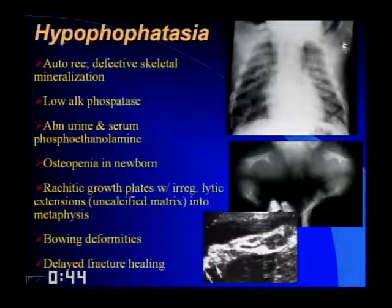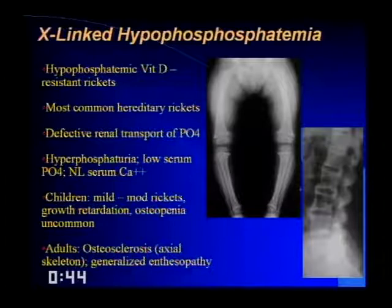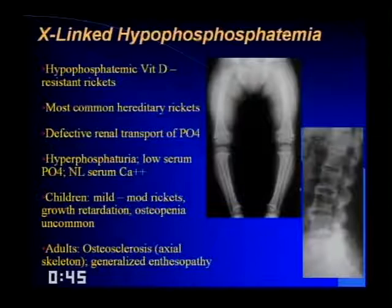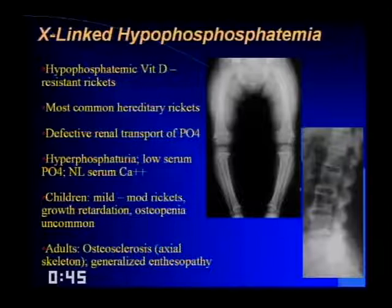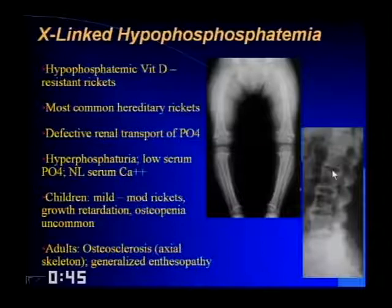X-linked hypophosphatemia — vitamin D-resistant rickets — is the most common hereditary type of rickets, with defective renal transport of phosphorus. Patients have hypophosphaturia, low serum phosphorus, and normal calcium. Ricketic changes are less severe than in renal rickets, and these patients typically do not have severe osteopenia. In adults, you'll frequently see enthesopathy with anterior-flowing osteophytes and osteosclerosis. For board candidates: if shown generalized enthesopathy requiring a differential, include vitamin D-resistant hypophosphatemic rickets, and note it can look very similar to DISH.